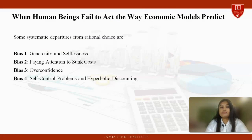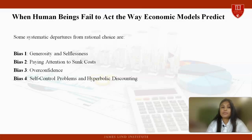There are some systematic departures from rational choice — different biases. The first bias is generosity and selflessness. The economic model of rational choice assumes rational self-interest, yet many people often engage in acts of generosity and exhibit altruism — the act of doing good to others. These acts are motivated primarily by concern for the welfare of others, with charitable donations being the most obvious example.